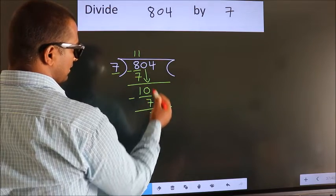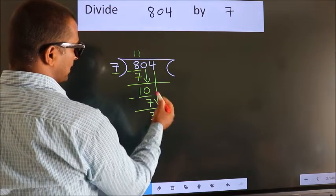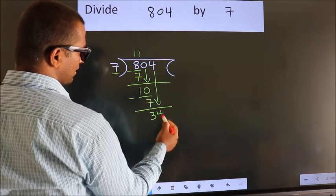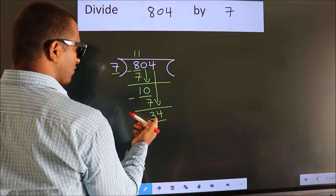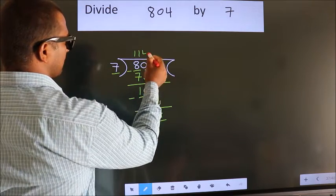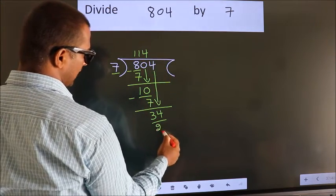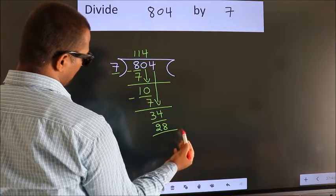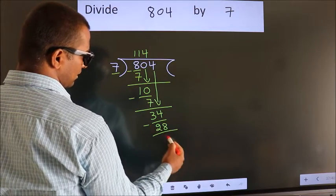After this, bring down the beside number. So 4 down. So 34. A number close to 34 in 7 table is 7 fours 28. Now we subtract. We get 6.